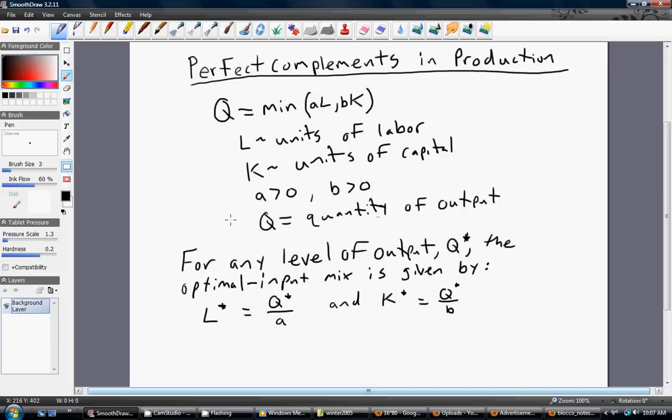So in a lot of these problems, we're asked to find the optimal input mix. You want to produce a certain level of output, so how many units of labor and capital should we use? This is fairly easy to find. For any given level of output, say Q star, the optimal input mix is given by these two conditions.